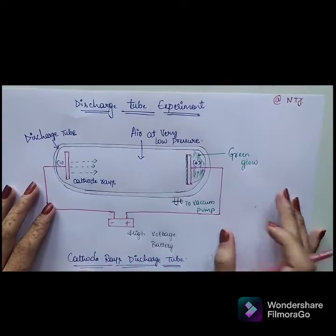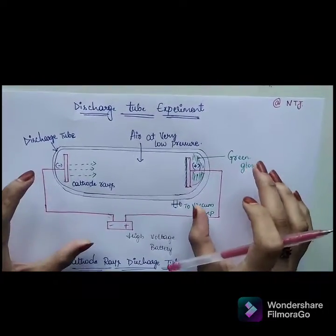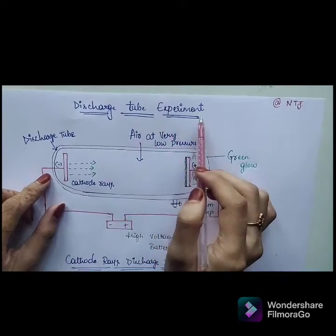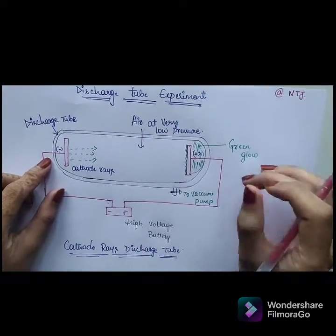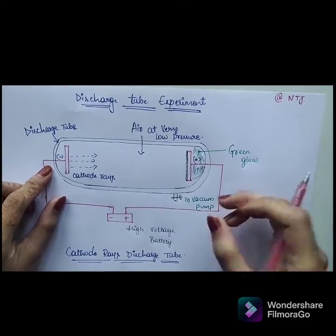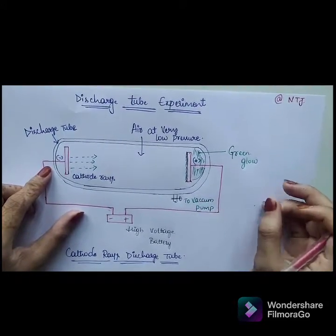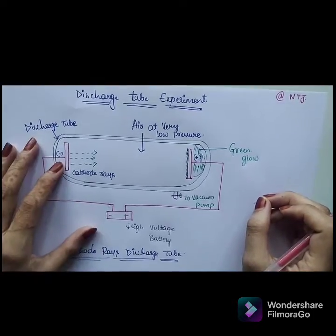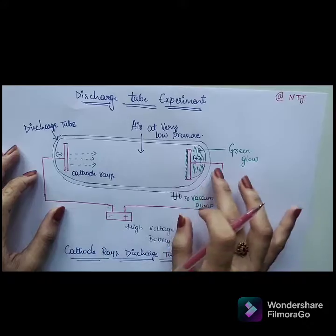Hi everyone, this is NTJ. Today let us start about a simple concept: the discharge tube experiment. From this experiment, we are concluding one subatomic particle which is usually present in an atom. Here is the apparatus of our discharge tube experiment.